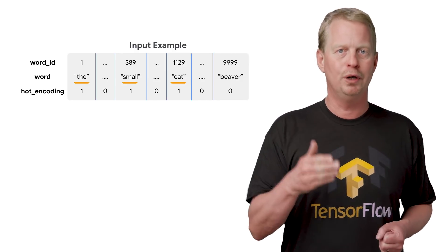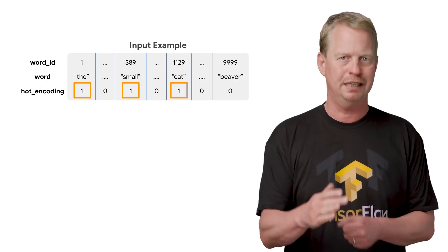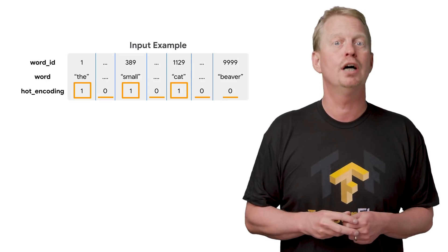As you can see, we put a 1 hot encoding at the array indexes for each word present, and 0 at all other indexes.